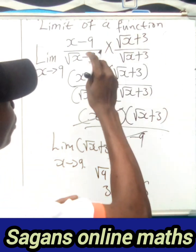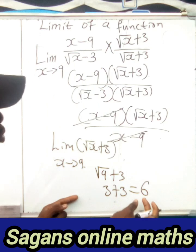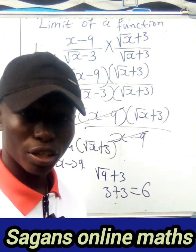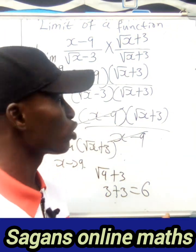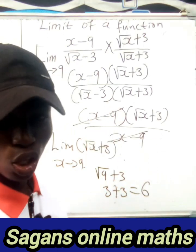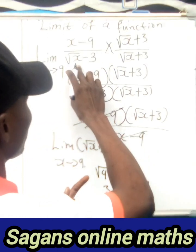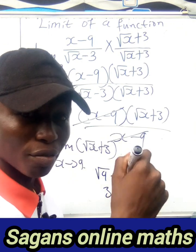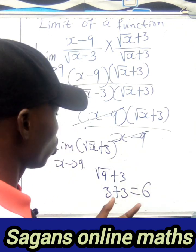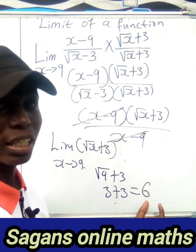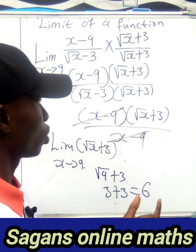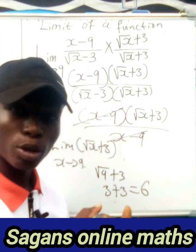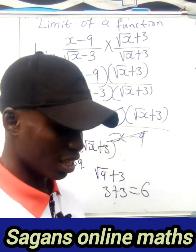So the limit equals 6. That is the first method of solving it — you can see how simple it is. When you're given something like this, don't rush to substitute. You must get a defined value, not undefined. The answer is six, and that is the clear solution using Method 1.